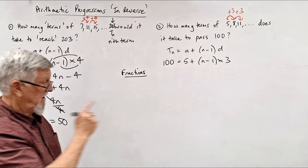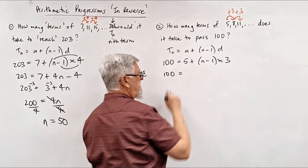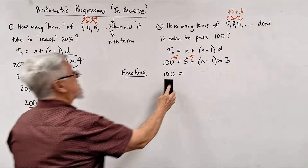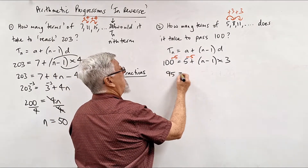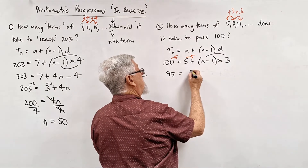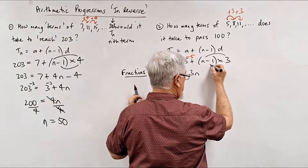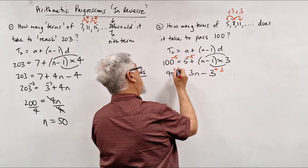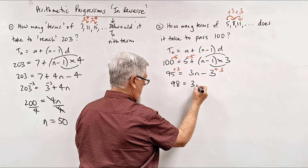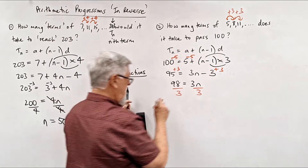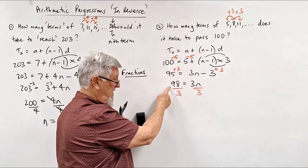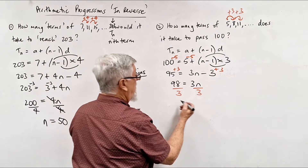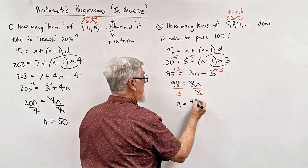Let's have a look. We've got T_n = 100. I'll subtract 5 from both sides: that gives 95 = 3n − 3. Adding 3 to both sides: 98 = 3n. Now when I divide by 3, I can instantly see that 98 is not divisible by 3 — if it were 99 it would be. So dividing by 3 leaves us with 98/3.